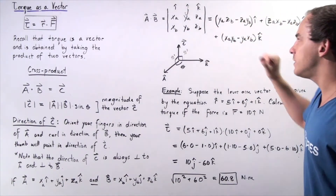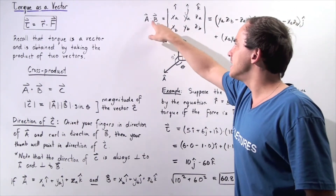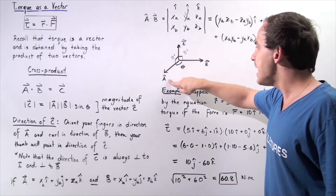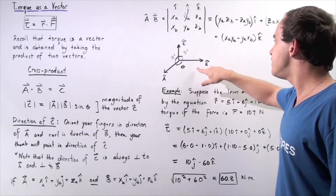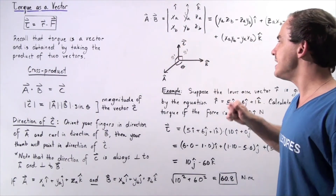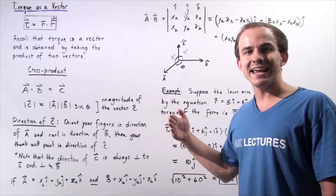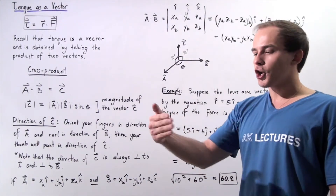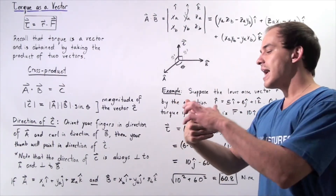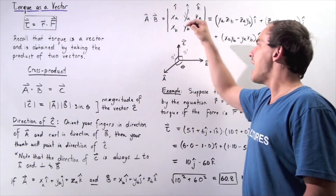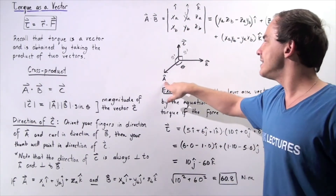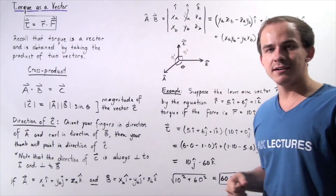The direction of vector C is perpendicular to both A and B and is found by the right-hand rule. For example, if vector A points out of the board and vector B points along the board, we take the right hand, point the fingers in the direction of A, curl them in the direction of B, and extend the thumb. The thumb points upward, and vector C is perpendicular to both B and A, as shown by the two 90-degree angles.